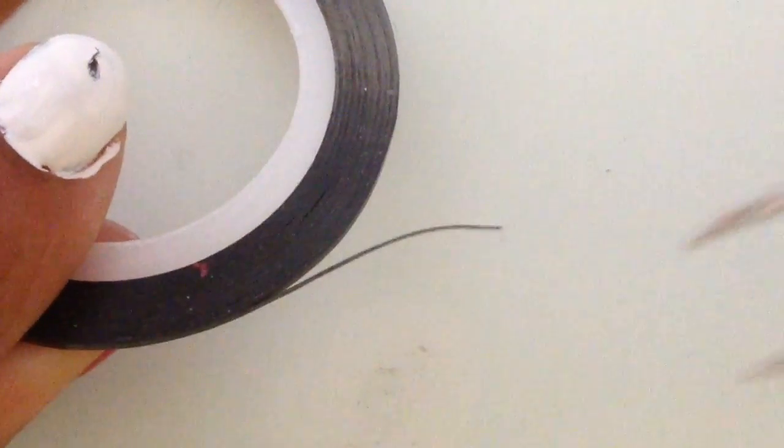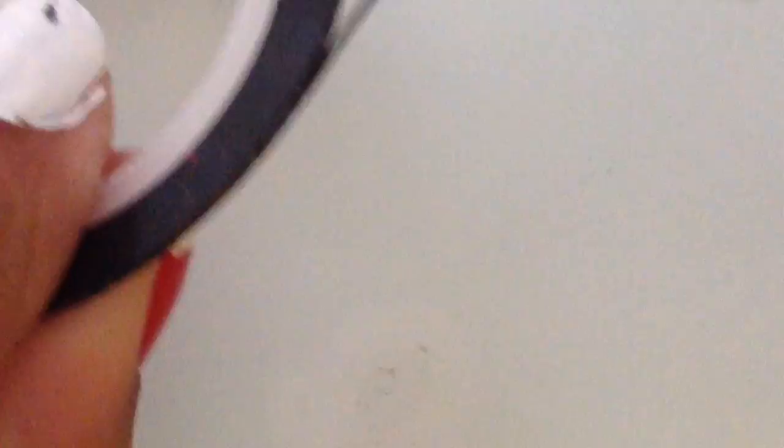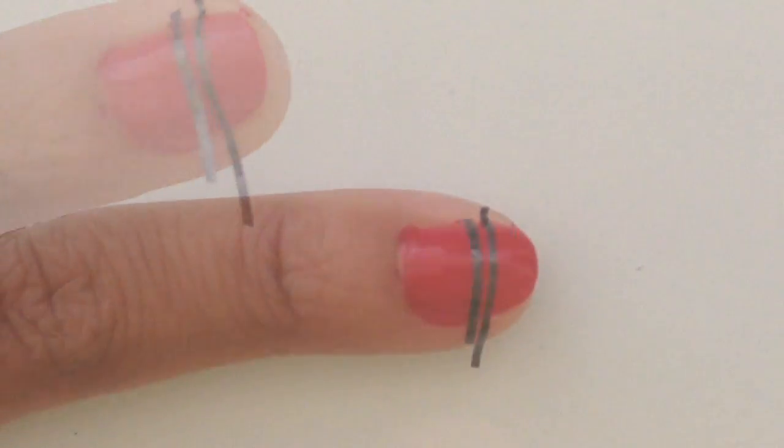Next, take another piece of striping tape. I like to cut mine with nail clippers and then once you've cut it, place it a bit below where you placed your first one and make sure it's parallel.